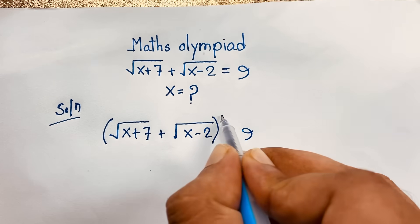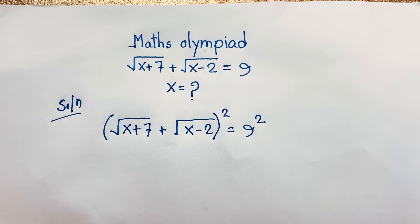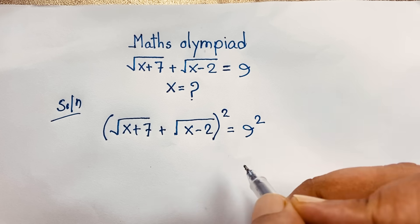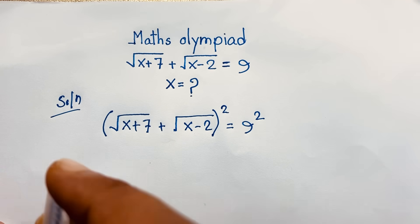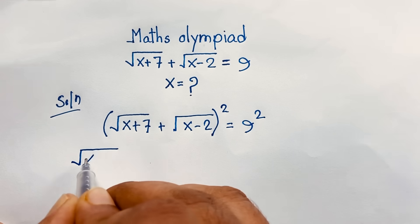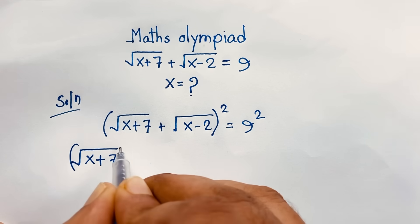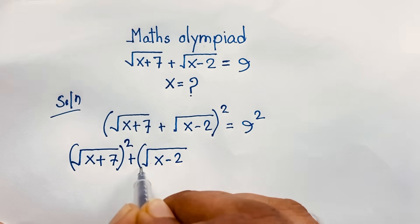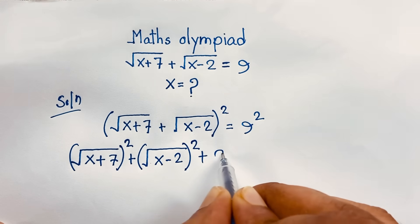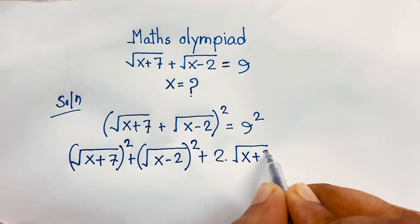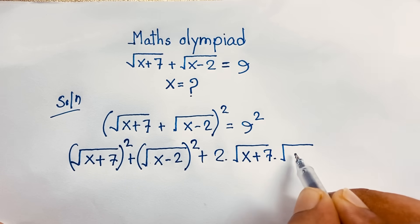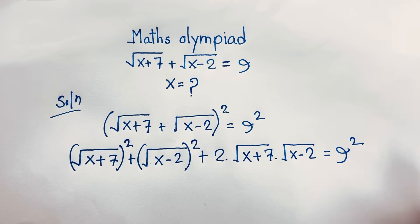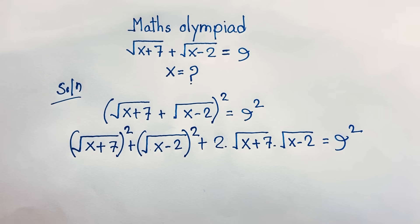So I use the (a plus b) whole square formula. You can see: this is a, this is b. So (a plus b) whole square equals a squared plus b squared plus 2ab. I'm going to apply this formula to the expression. It will be (square root of x plus 7) squared, plus (square root of x minus 2) squared, plus 2 times (square root of x plus 7) times (square root of x minus 2), equal to 9 squared.